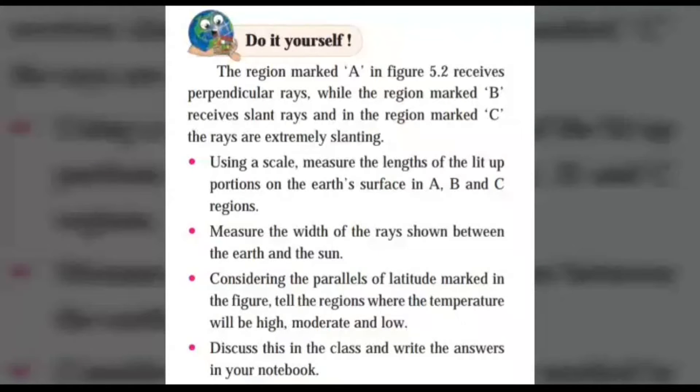Do it yourself. The region marked A in figure 5.2 receives perpendicular rays, while the region marked B receives slant rays, and in the region marked C, the rays are extremely slanting. Using a scale, measure the length of the lit up portion on the earth's surface in A, B, and C regions. Measure the width of the rays shown between the earth and the sun. Considering the parallels of latitude marked in the figure, tell the regions where the temperature will be high, moderate, and low.